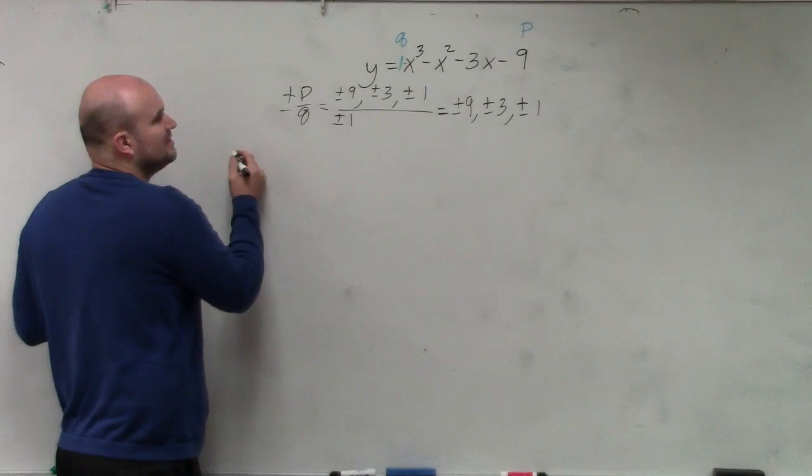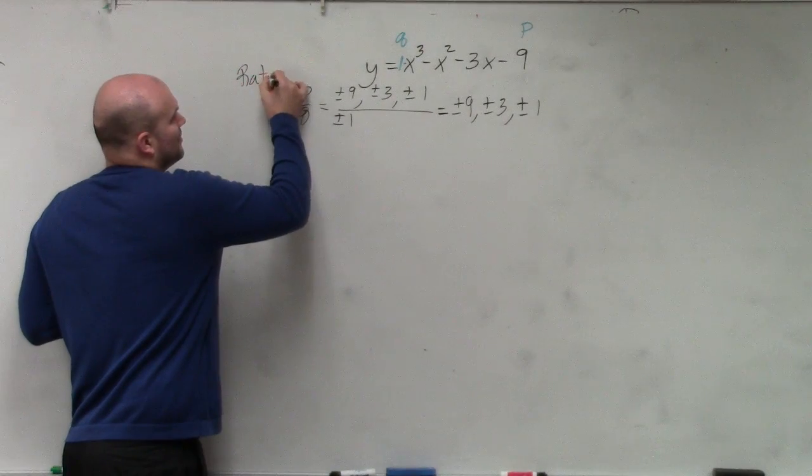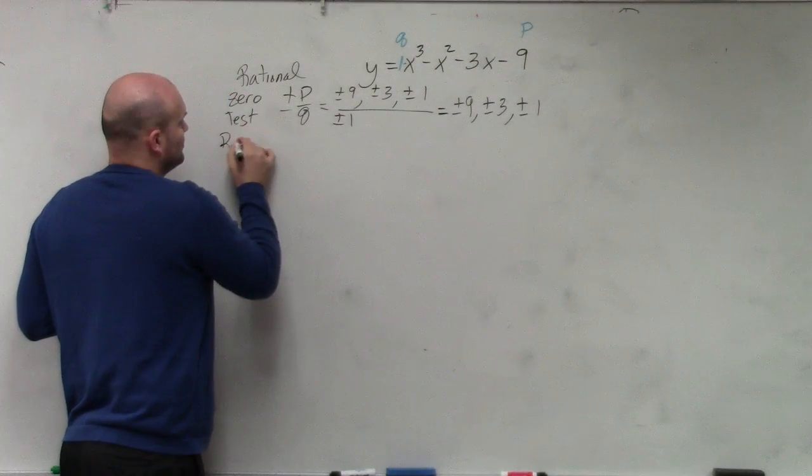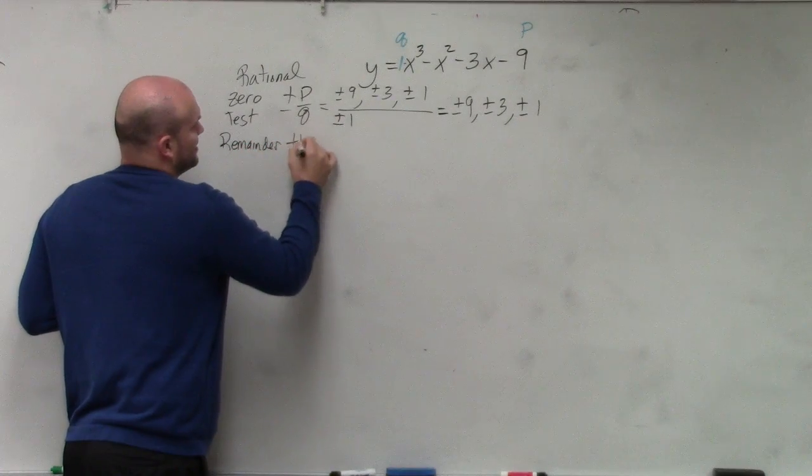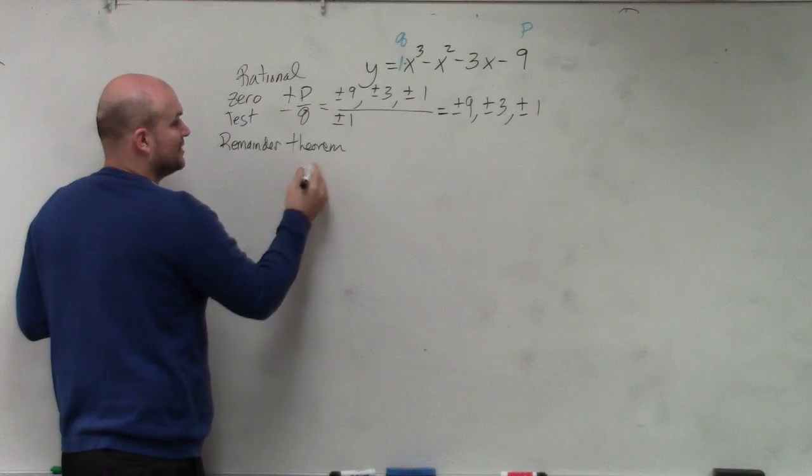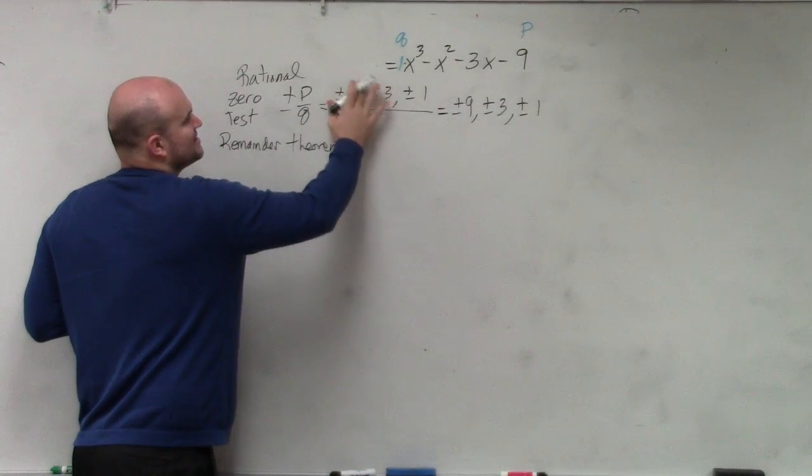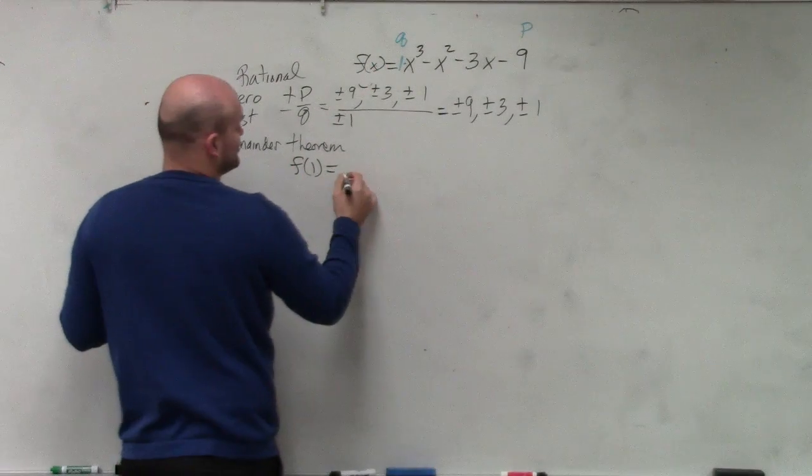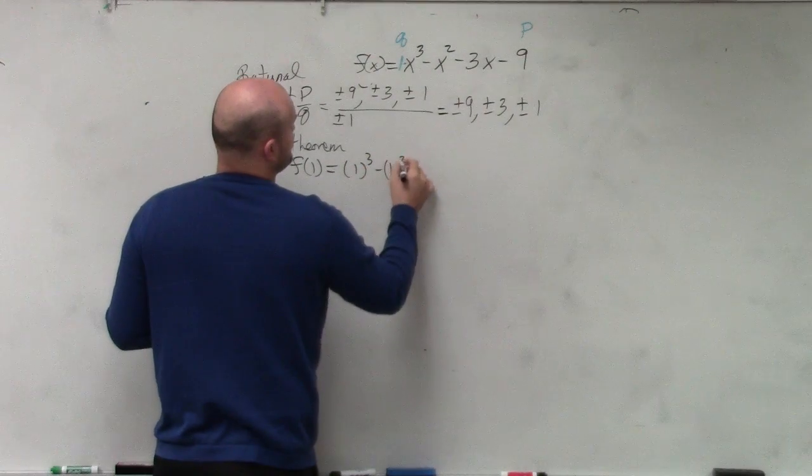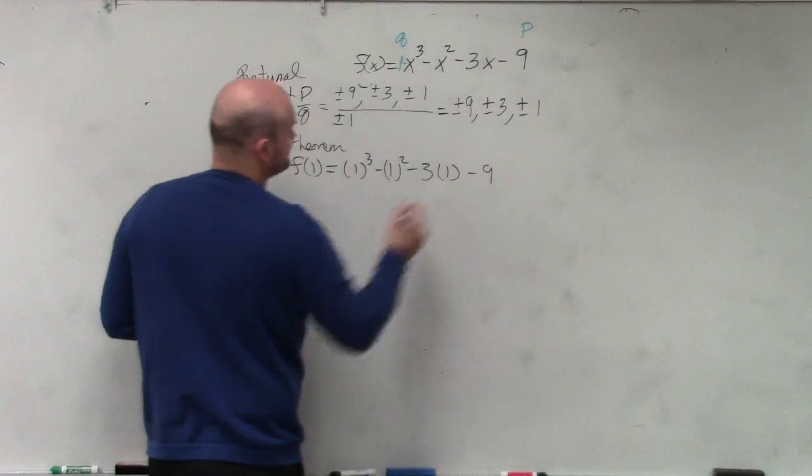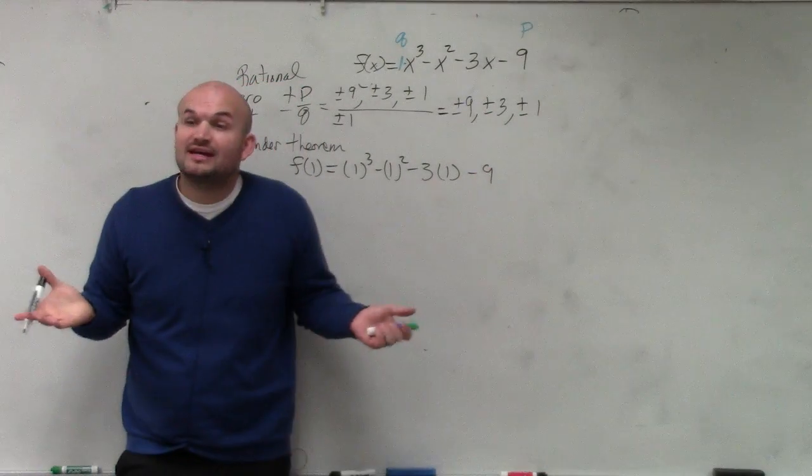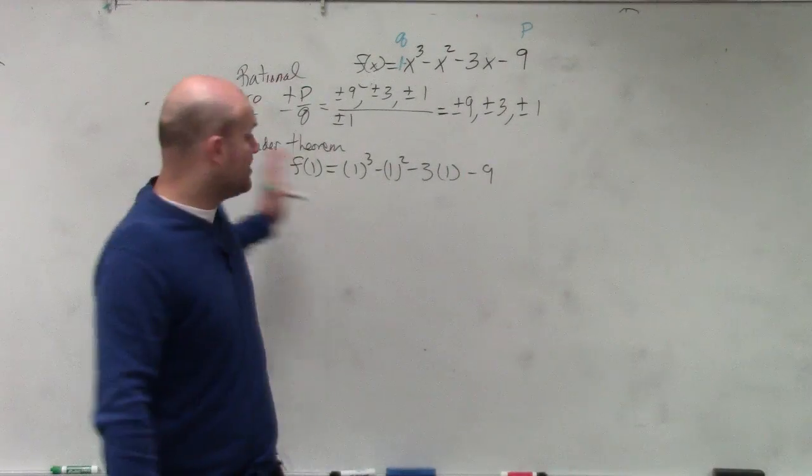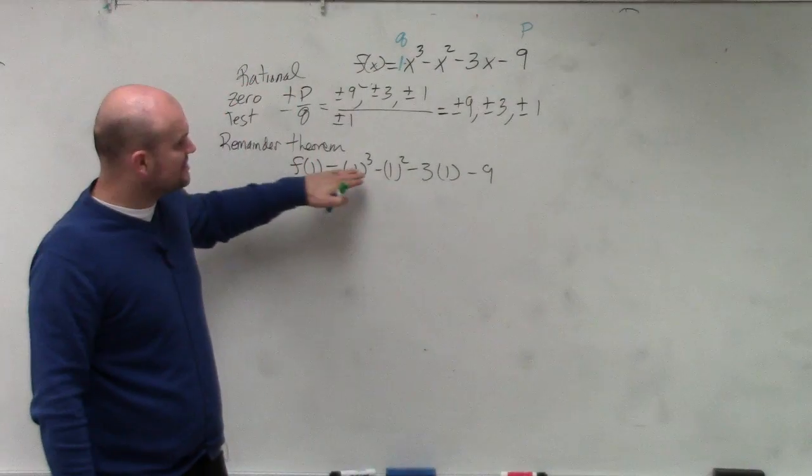So the way that we test them was using the remainder theorem. So let's write down our forms. We have the rational zero test. Once we do the rational zero test, we'll test them using the remainder theorem. If you guys remember the remainder theorem, all we're simply going to do is plug in. I'm going to replace this with an f(x) just so you can show that I'm going to do f(1). So I'll do 1 cubed minus 1 squared minus 3 times 1 minus 9, and then we see what that is.